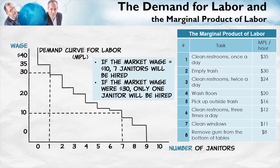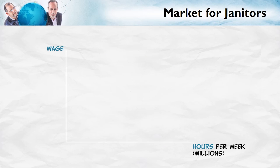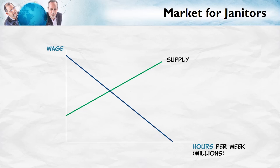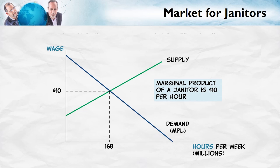Now this is the demand for janitors from a single firm. Consider summing up the quantity of janitors demanded at each wage for all the firms in the market — that's how we get to the market demand for janitors. Here's the market for janitors in the United States. We have a demand curve derived from the marginal product of labor and a supply curve. The supply curve says that as the wage increases, the quantity of janitors supplied will also increase. The wage is determined, as usual, by the intersection of the demand and the supply curve.